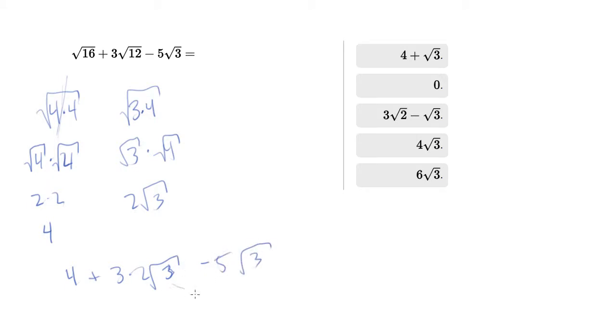We have two root 3 terms here, so I'm going to factor that out. We'll end up with 4 plus root 3 times, 3 times 2 is 6, minus 5, which becomes a 1. So this just becomes 4 plus root 3, which is the first answer choice.